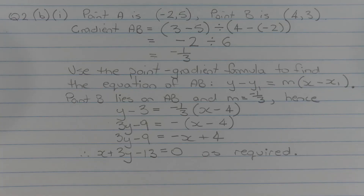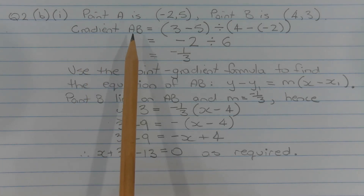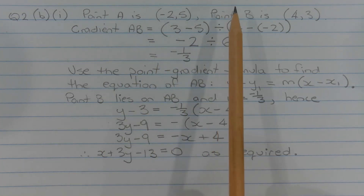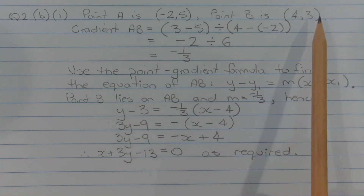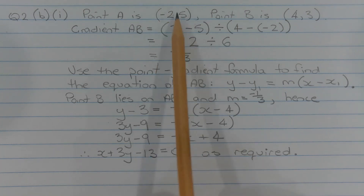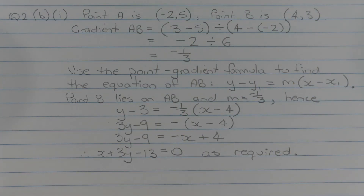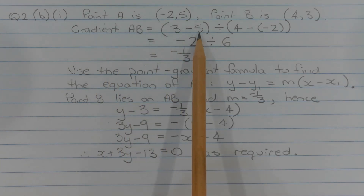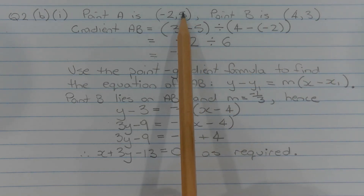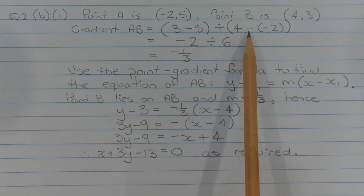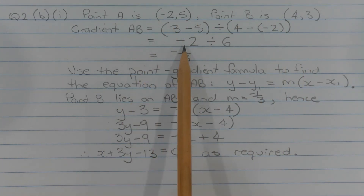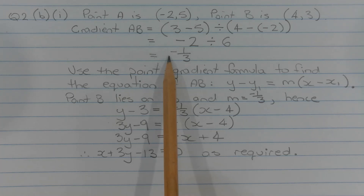The first thing I am going to do is find the gradient of interval AB using the 2-point formula. The coordinates of point A are (-2, 5) and the coordinates of point B are (4, 3). Substituting into the formula, gradient AB equals y2 minus y1 divided by x2 minus x1, which is 3 minus 5 divided by 4 minus negative 2, giving negative 2 divided by 6, which equals negative 1 over 3.